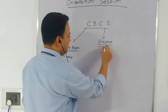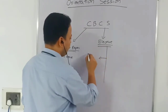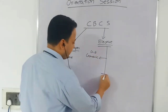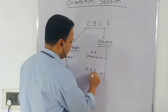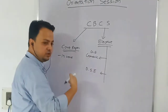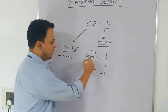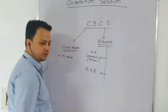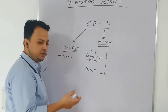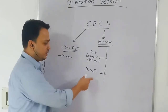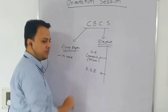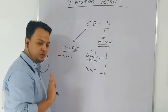The elective paper is divided into two categories. First is Generic Elective, which we call GE. Second is Discipline Specific Elective, DSE. In the generic elective, if you choose the same paper across semesters, you will earn a minor. Discipline Specific Elective is an application-based paper where you apply the theory you are learning.